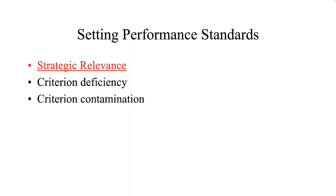Another issue is criterion contamination, in which elements that affect the appraisal are measured but should not be part of the actual performance score. The reliability of scores on a selection test or a performance measure must be consistent across raters and/or over time. These scores must be accurate and dependable and not random or error prone. We cover a few of the sources of rating error in greater detail later in this lecture.